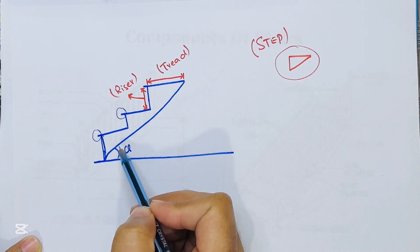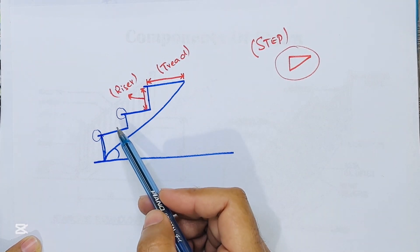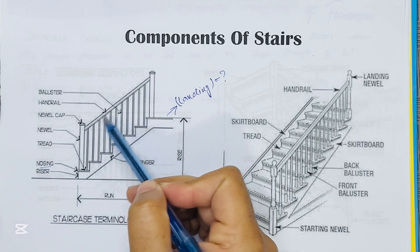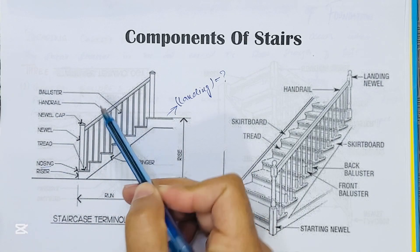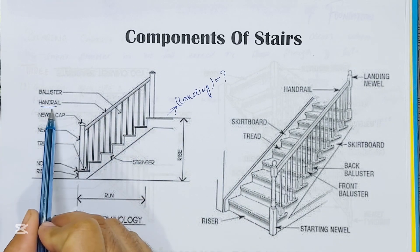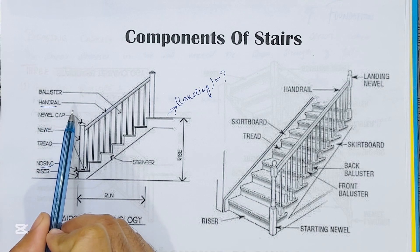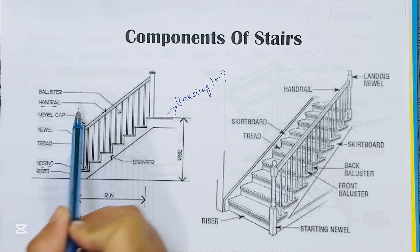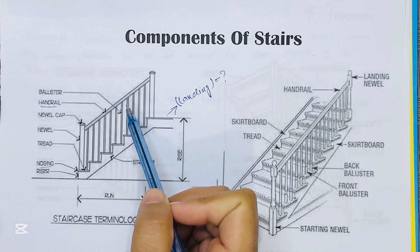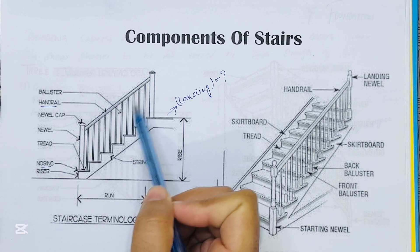Nosing is rounded to give a good aesthetic effect and make the staircase convenient and easy to use. This is a handrail. A handrail is an inclined rail provided at a convenient height over balustrades; the inclination of the rail is parallel to the slope of the stair.